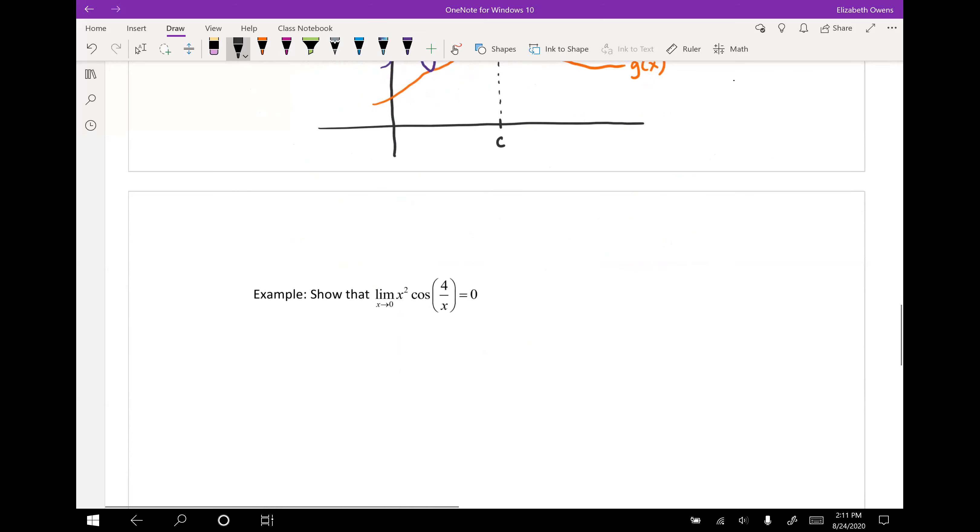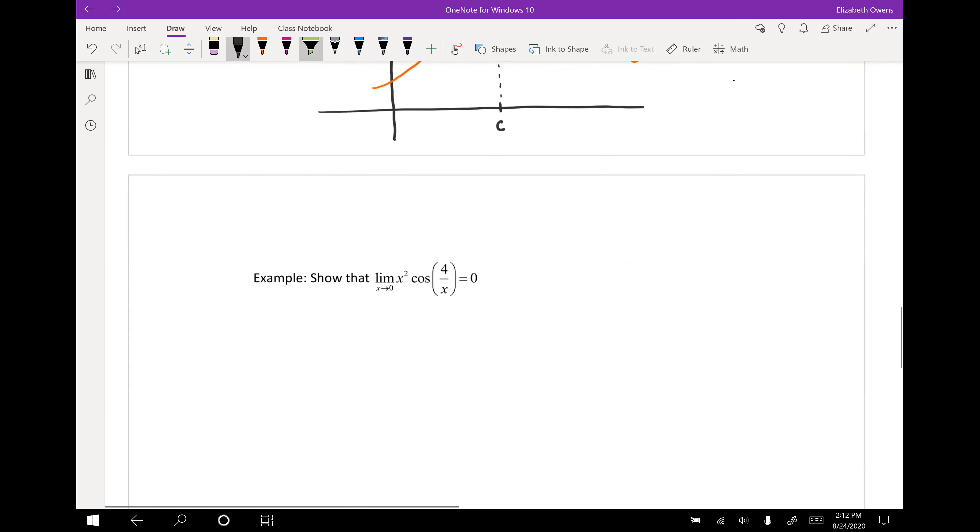For our example, we are going to show that the limit as x approaches zero of the function x squared cosine four over x. We're going to show that that limit actually equals zero.